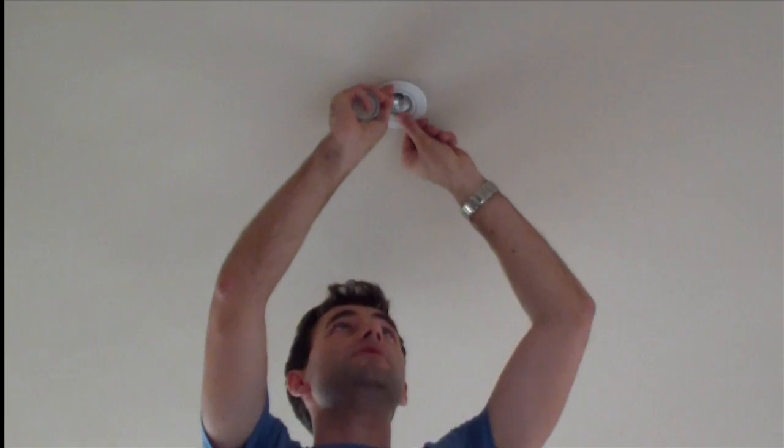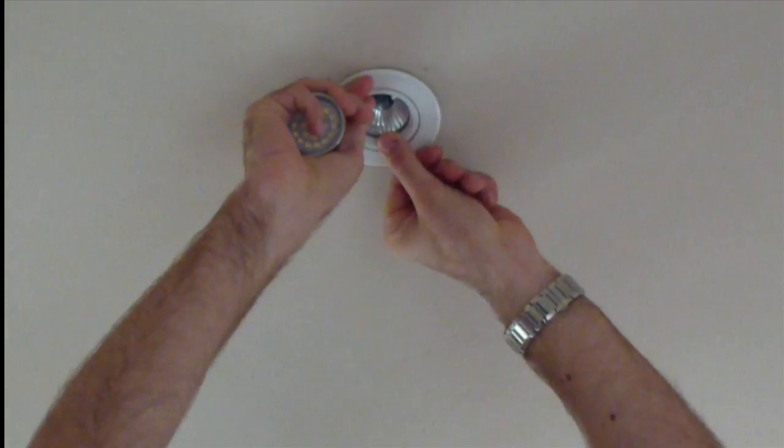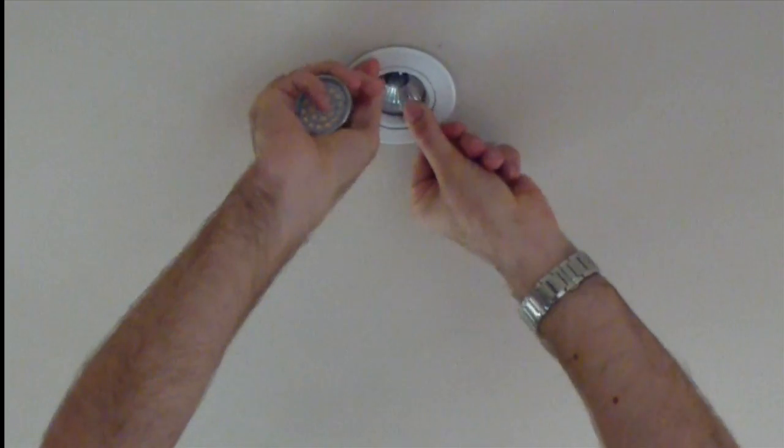The process should be quite simple. You release the existing bulb, which in this example just twists and comes out.